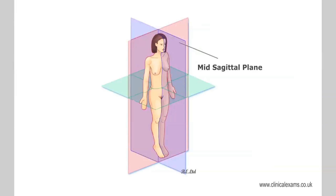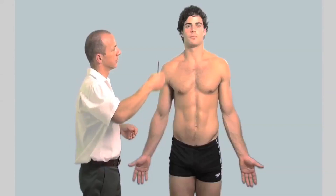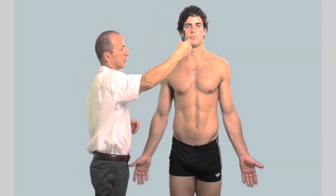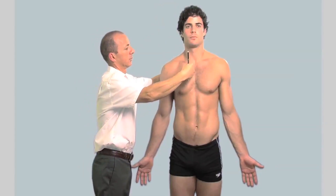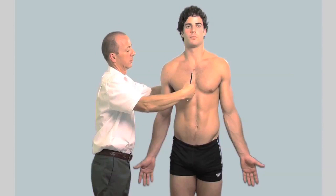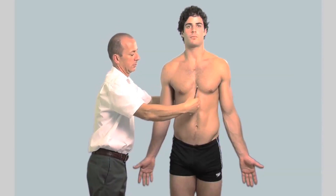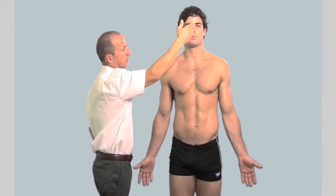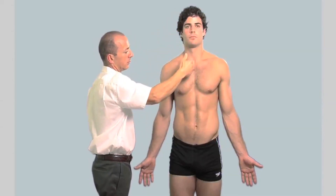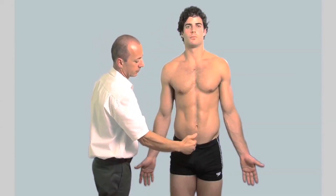Location of structures are often described in relation to the anatomical planes. The mid-sagittal plane is marked by a vertical line running in an antero-posterior direction, dividing the body into equal and near-symmetrical left and right halves. This line runs through the centre of the nose, the sternum and the symphysis pubis.